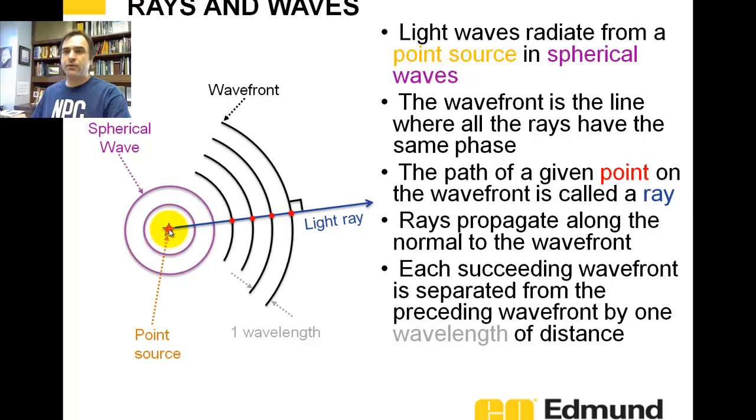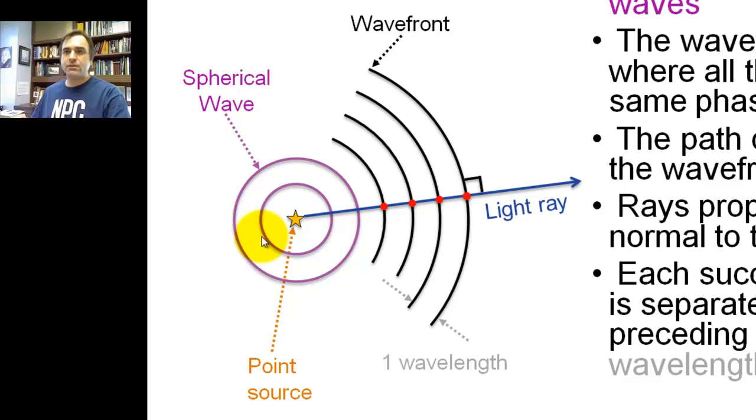Here is a perfect point source, call it a star. It's infinitesimally small, and it's going to emit light rays or waves, light waves out in spheres. So each sphere here, and here's some arcs, these all represent the peak of the amplitude of the electric field. I'll get into that a little bit later.